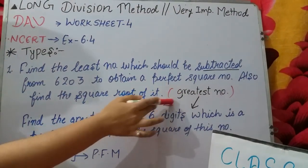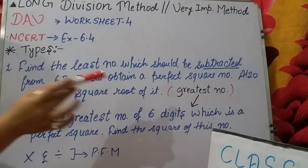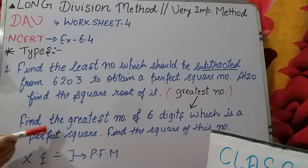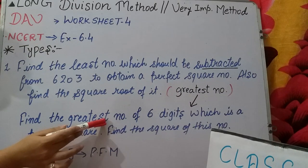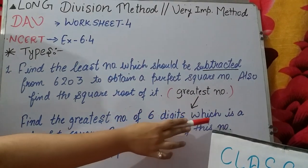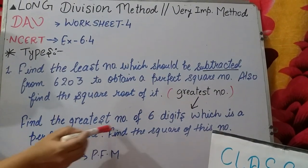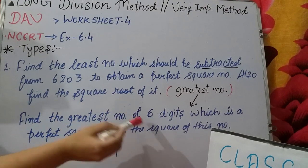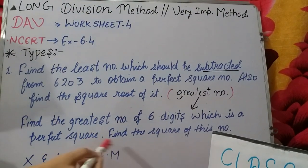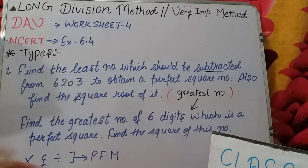So see, in the question the greatest question is asked: find the greatest number of six digits which is a perfect square. You have to find out the greatest number of six digits and you have to find the square root of it.